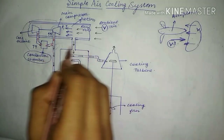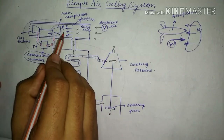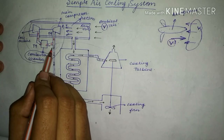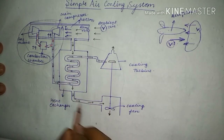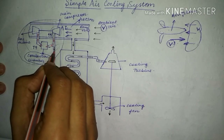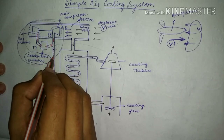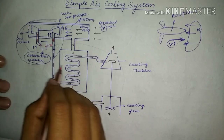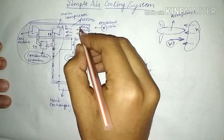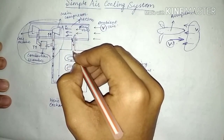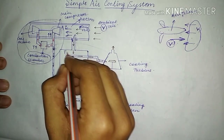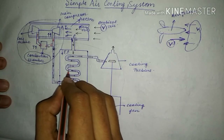We utilize the high pressure and high temperature air for the refrigeration process. We bleed some of the air from this portion and feed it into the heat exchanger. When this high pressure and high temperature air enters the heat exchanger, we make a passage for the ram air to also enter.